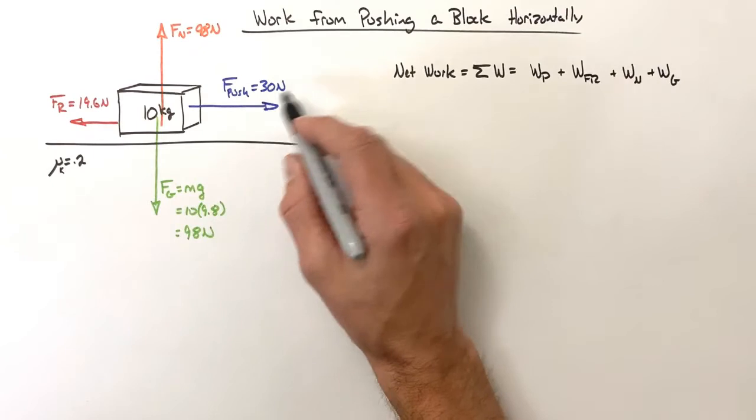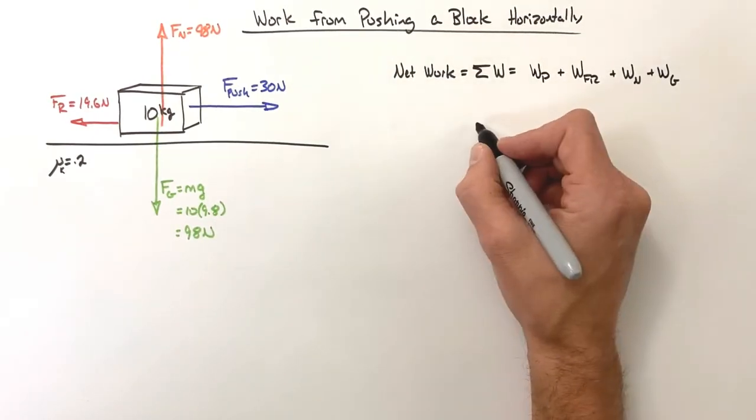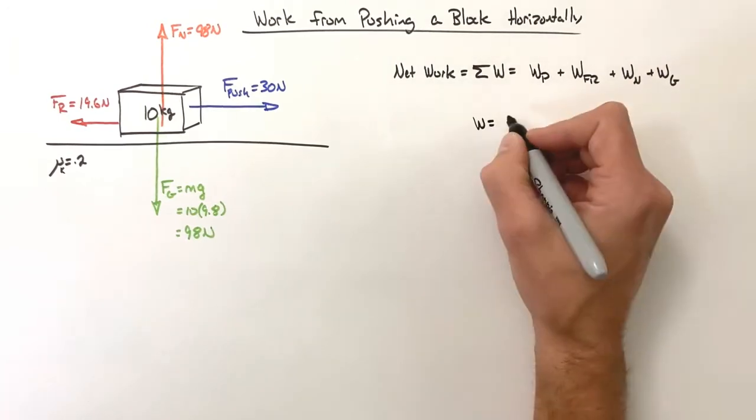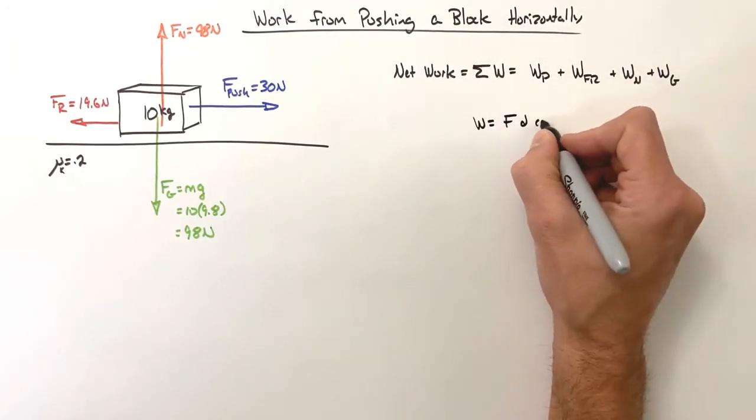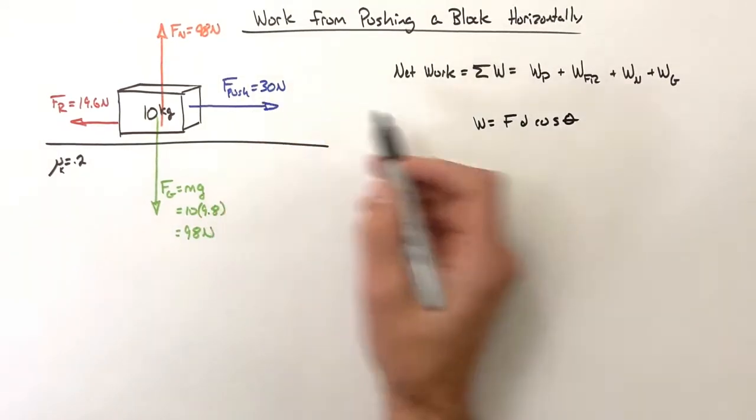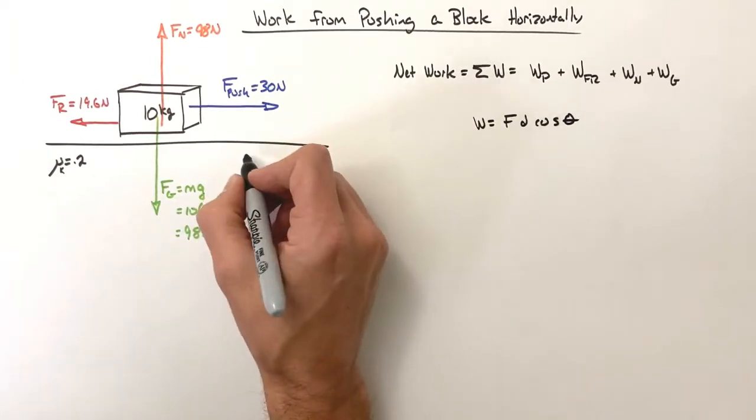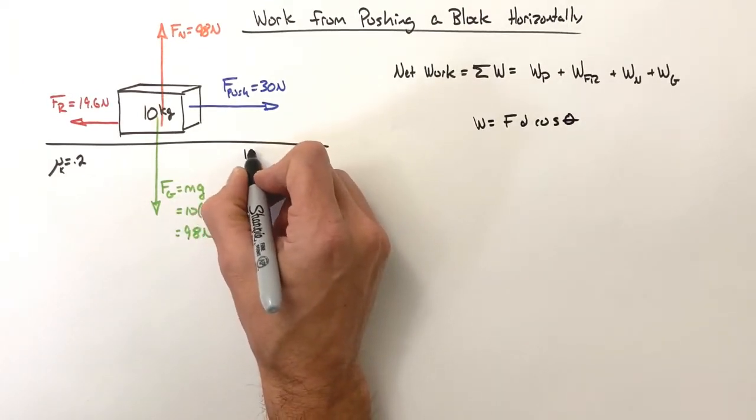To calculate the work done by the push force, of course we need an equation for work. And remember, work is equal to F times d times cosine theta. So in this case we have a push force forward—that's our force—and we're going to let this block move forward some distance. So let's let this move forward through a displacement of, how about, 10 meters.